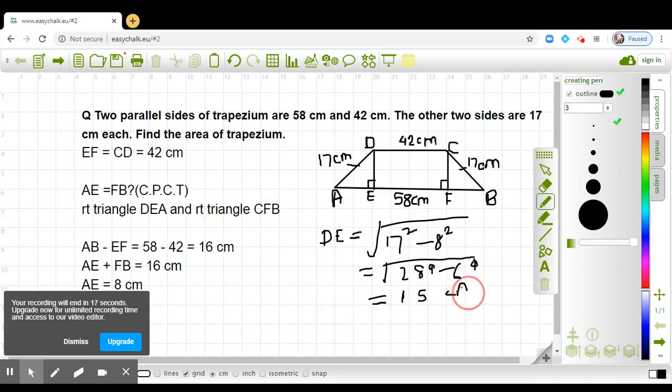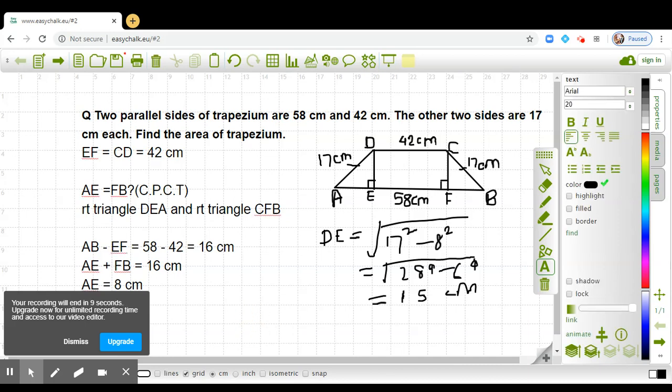Now DE is 15 cm, so what will be the area of trapezium? The formula is half times h times sum of parallel sides. Please complete it.